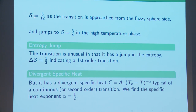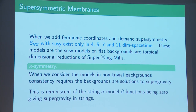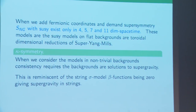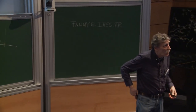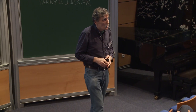From that effective potential one can derive that S = 5/12 as the transition is approached from the fuzzy sphere side, and S = 3/4 on the other side, so there's a jump in the internal energy — S being the expectation value of the action. The divergence of the specific heat gives this result. The series works quite well.